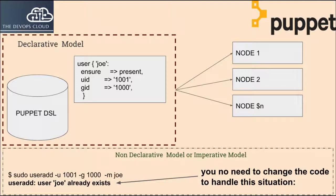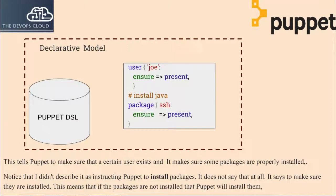A user named JoeUser should be present, a home directory for the user should be created, and so on. It is very clear and very easy to read. Exactly how the user should be created is not within the code, nor are instructions for handling different operating systems. Declarative language is much easier to read and less prone to breakage due to environment differences.